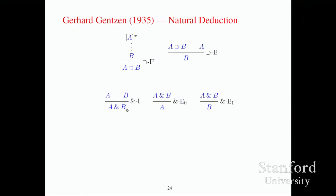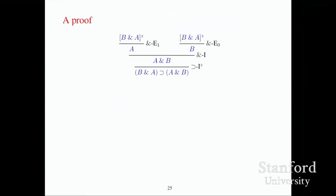Similarly for conjunction: if you have a proof of A and a proof of B, you've proved A and B. And if you have a proof of A and B, there are two things you can do — conclude A, or conclude B. We can take these proofs and organize them into trees. Here's a very simple example: the proof that B and A implies A and B.